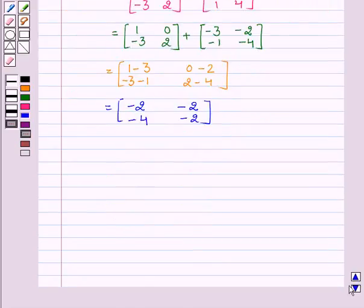This implies 2X equals [minus 2, minus 2, minus 4, minus 2].